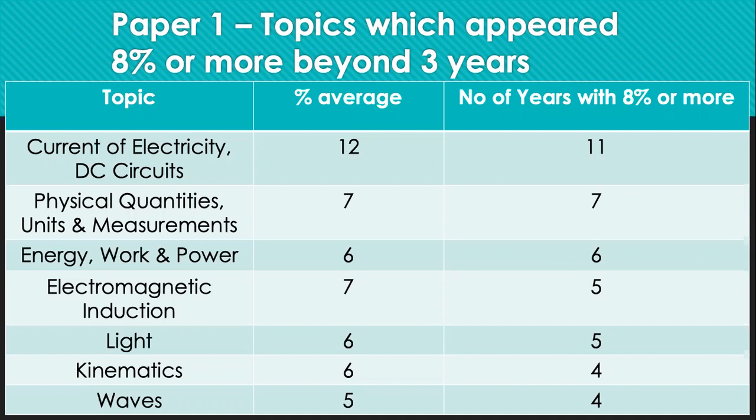So over the past 11 years, the average percentage appear in paper 1 is a high 12%. This is quite significant. And every year without fail, the questions appear at least 8% of the entire paper.